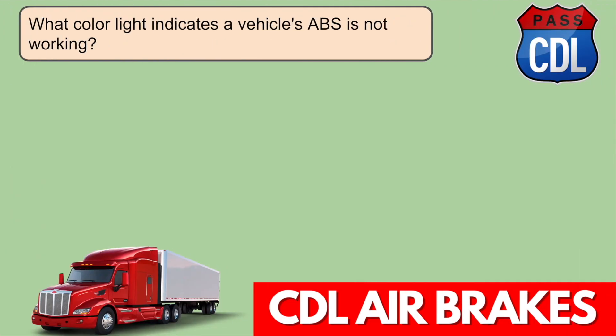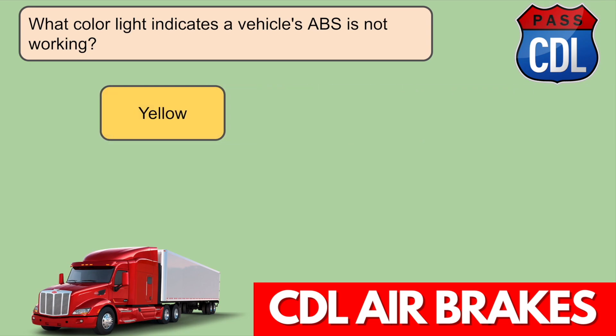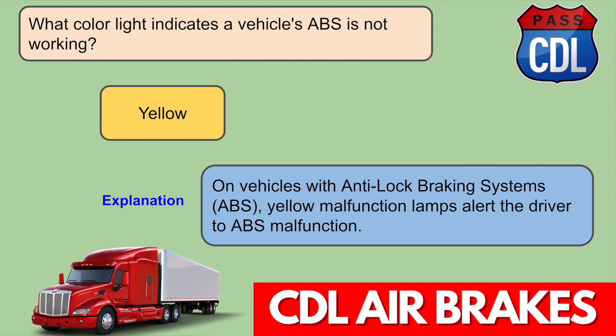What color light indicates a vehicle's ABS is not working? Yellow. On vehicles with anti-lock braking systems (ABS), yellow malfunction lamps alert the driver to an ABS malfunction.